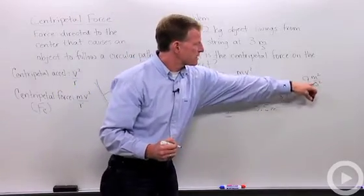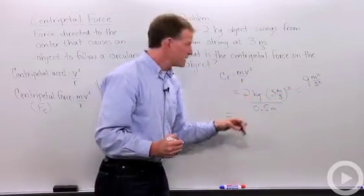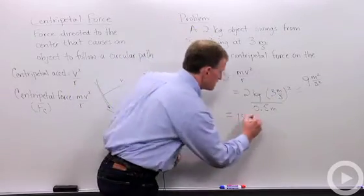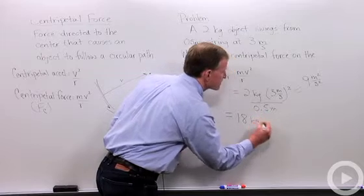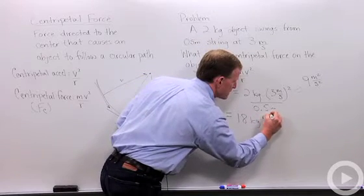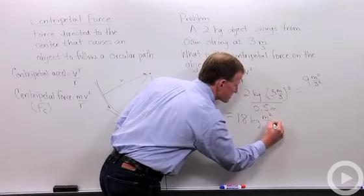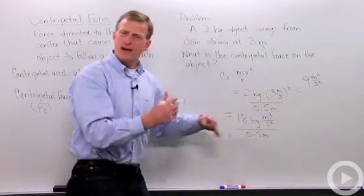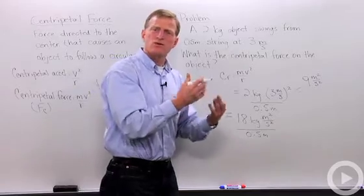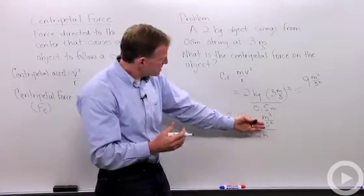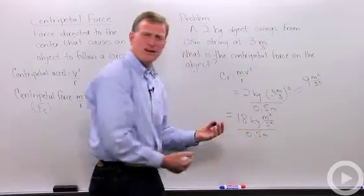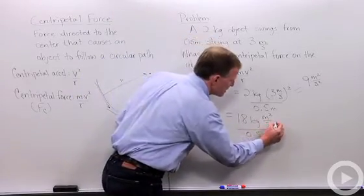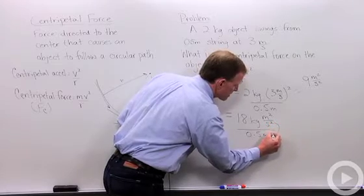So 9 meters per second squared times 2 is 18. And let's keep our units there. 18 kilograms times meters squared over seconds squared over 0.5 meters. Another thing students oftentimes get tripped up is, I've got this unit up here and this unit up here and I've got a unit down here. How do I solve for that? Well, remember, this unit can actually come down here.